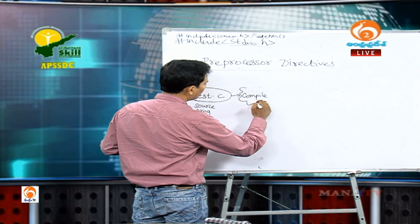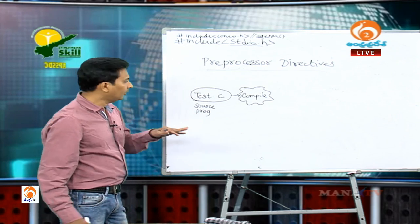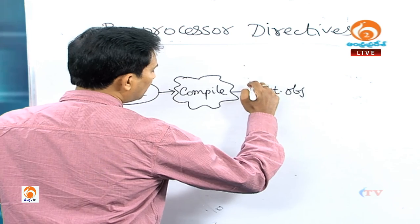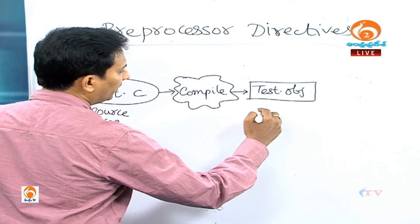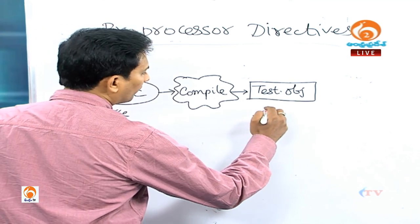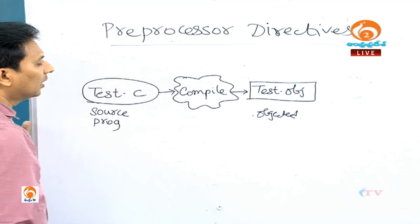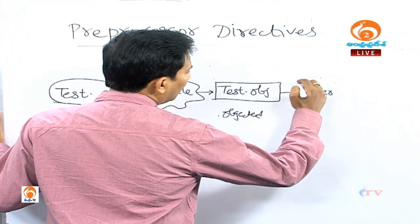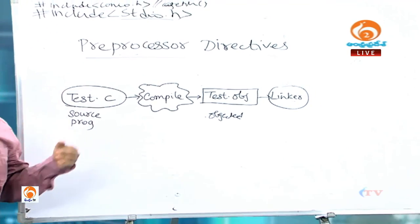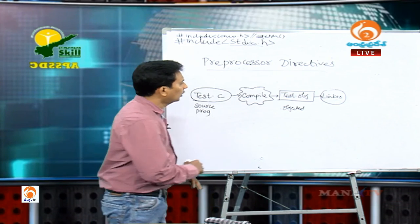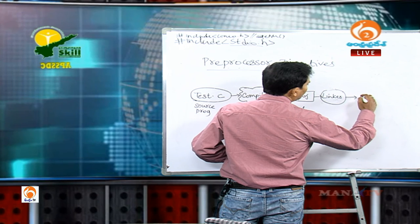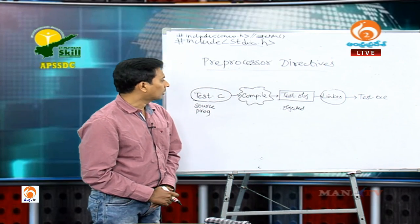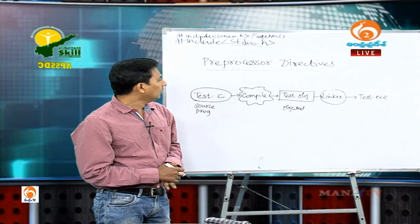When we compile the source program, it becomes test.obj — an object file, which is assembly-level object code. Whenever we execute this program, the linker gets involved. The linker links the header files. After linking the header files, we get the executable program — test2.exe.